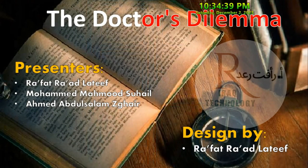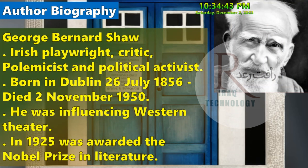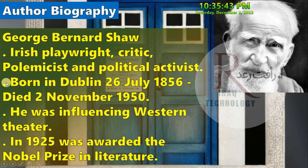As we said, we are going to talk about author biography: George Bernard Shaw. He is an Irish playwright, critic, polemicist, and political activist. Born in Dublin on 26 July 1856 and died on 2 November 1950.